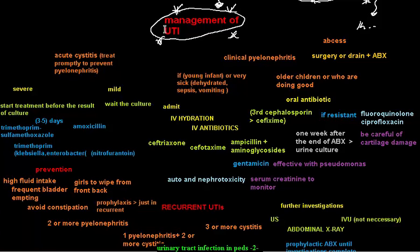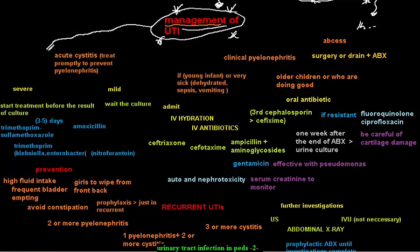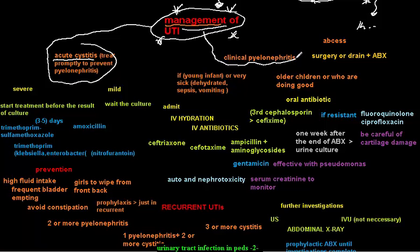This is the second video about urinary tract infection. In this video I'm going to talk about the management of urinary tract infection. I divided the management into three conditions: the first is acute cystitis, the second is clinical pyelonephritis, and the third is the treatment of abscess.